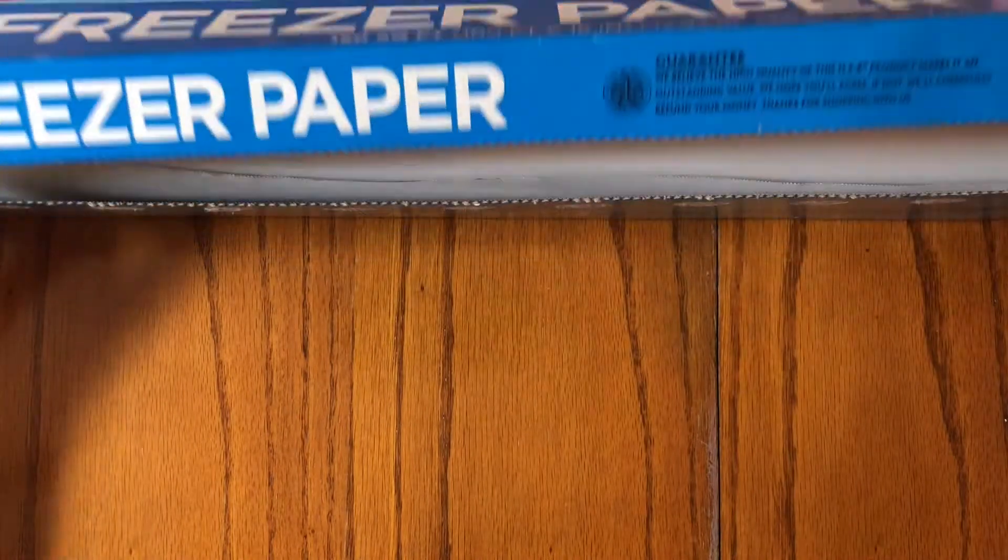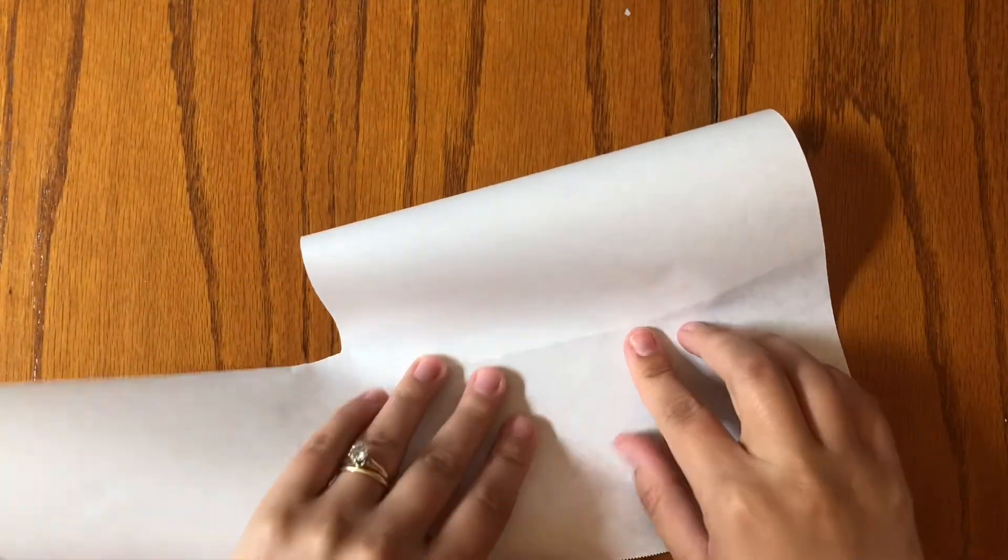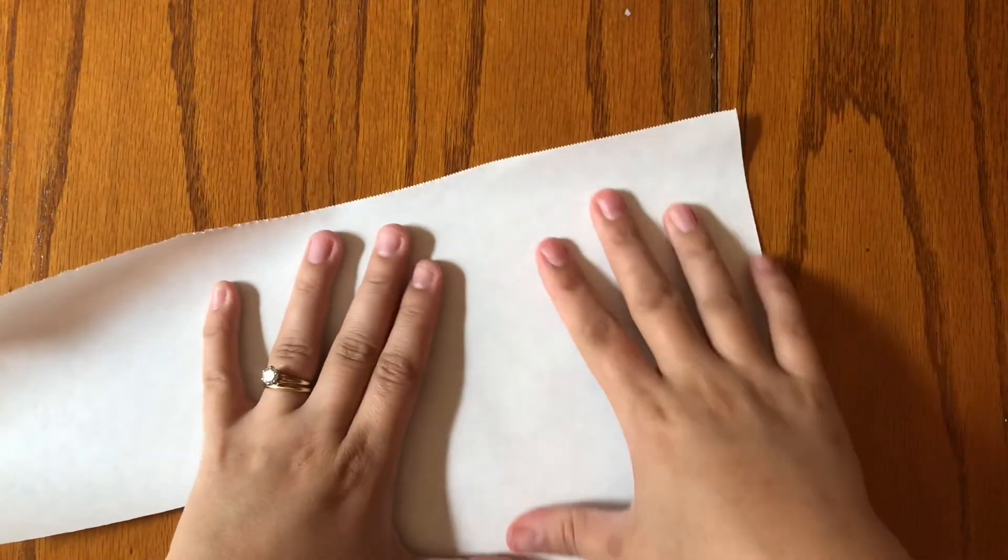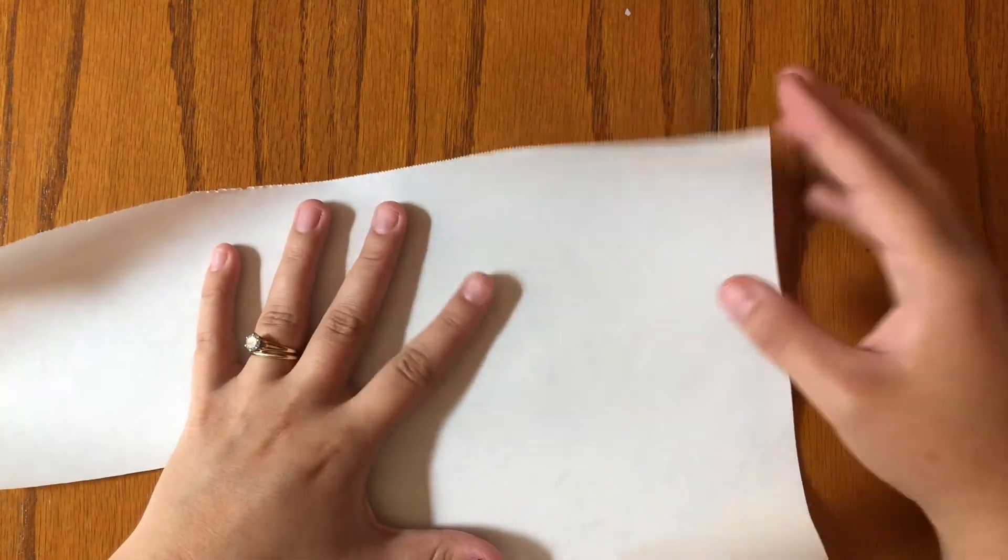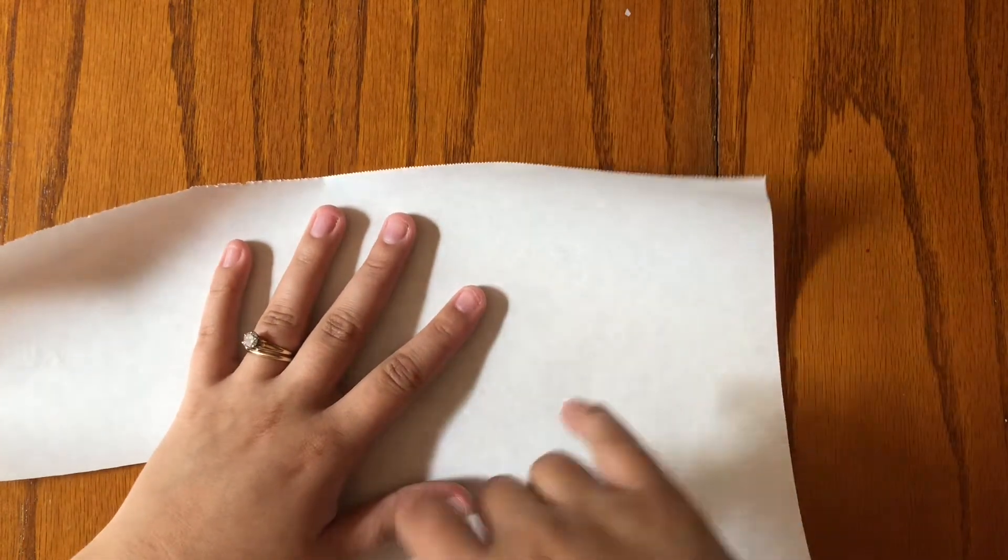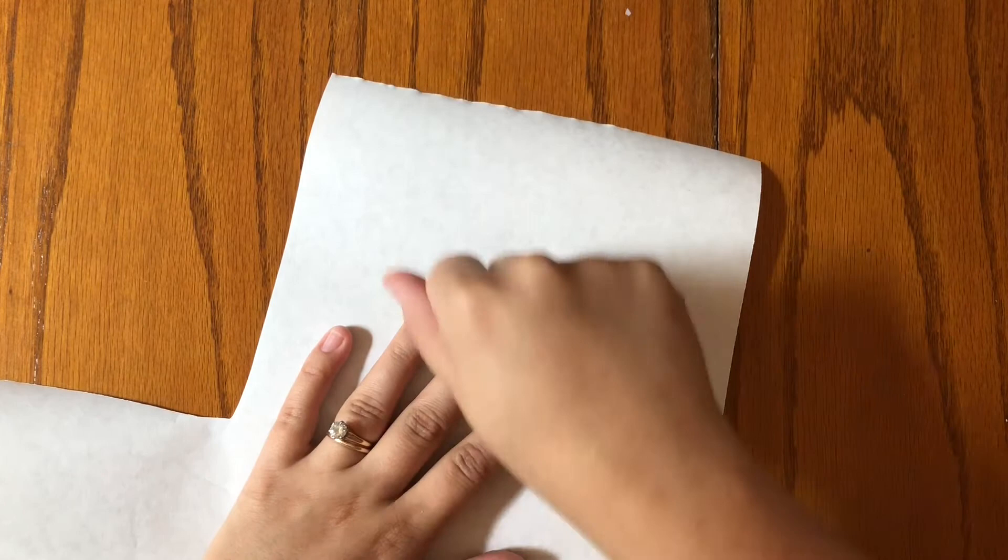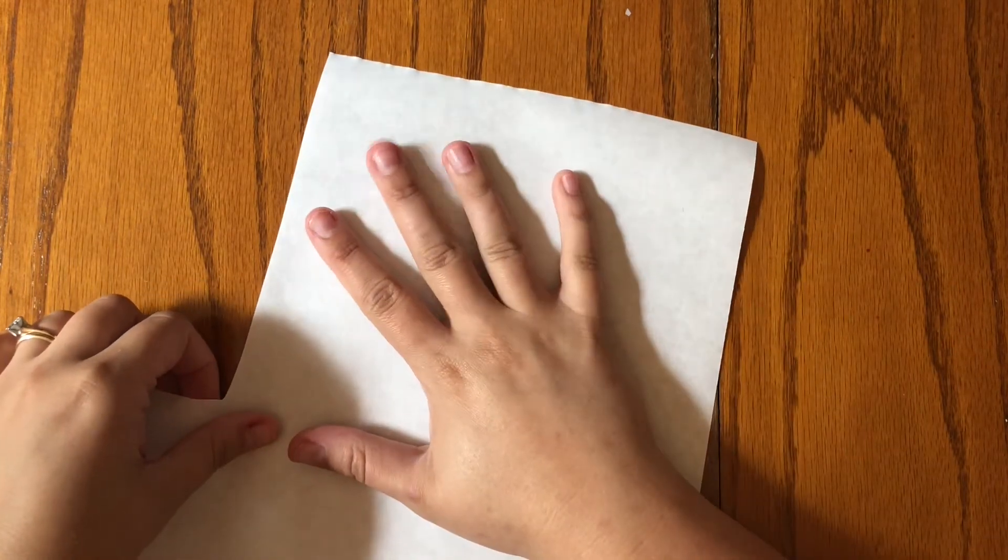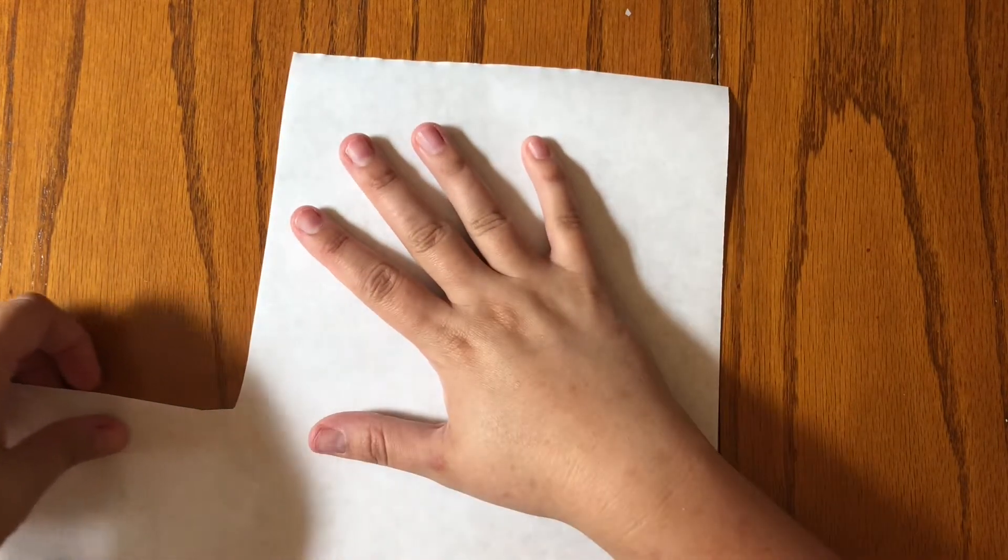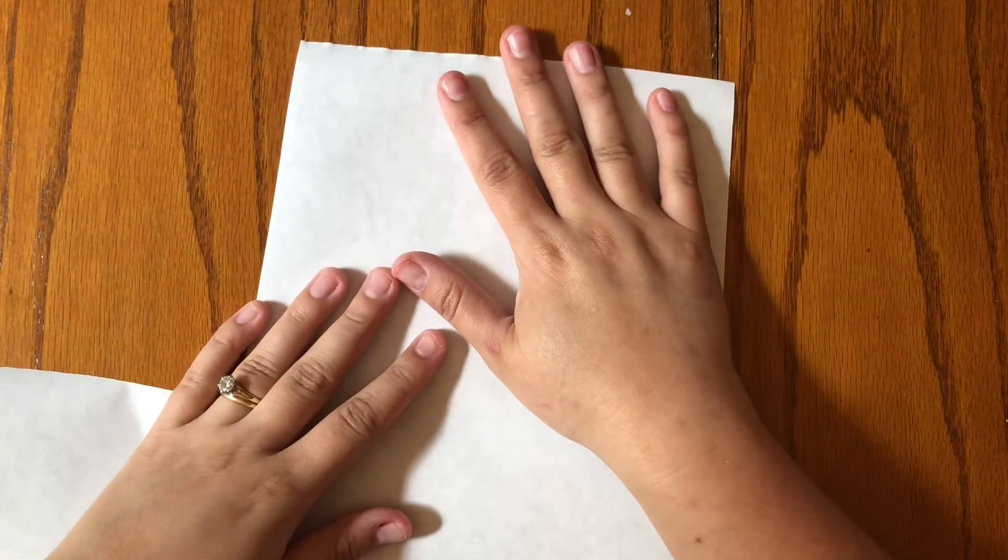Freezer paper is sort of like wax paper. It's got a parchment side, that's the paper side, and then it's got a waxy shiny side on the other. The waxy side is gonna fuse to our fabric and the paper side is gonna be where we draw our design and where we put our iron as well. It's usually used to wrap and store food, but we're gonna be using it for this purpose today.